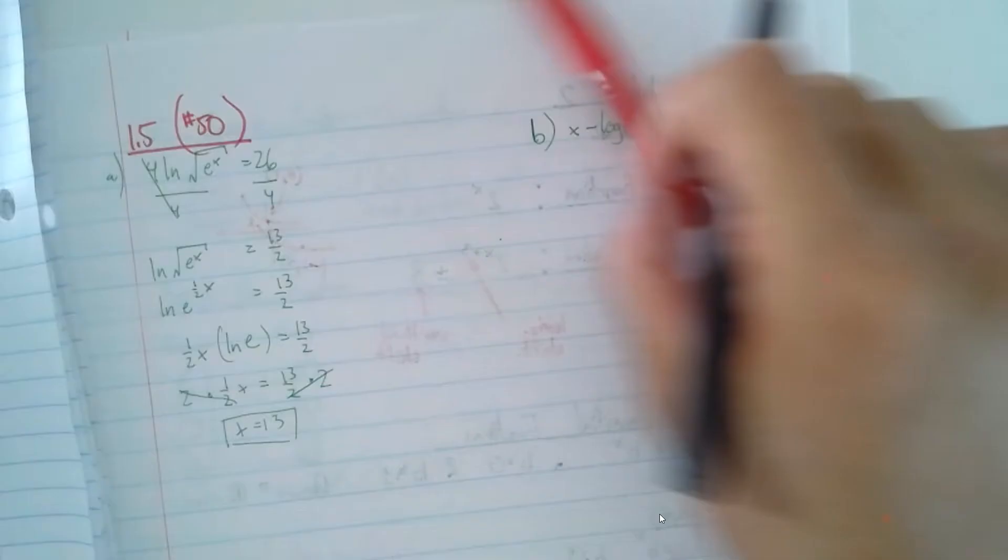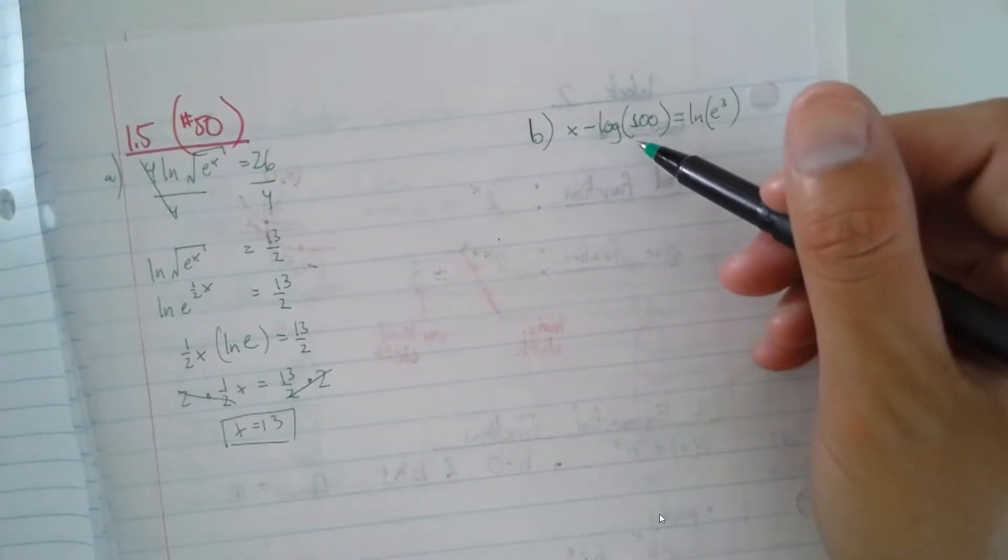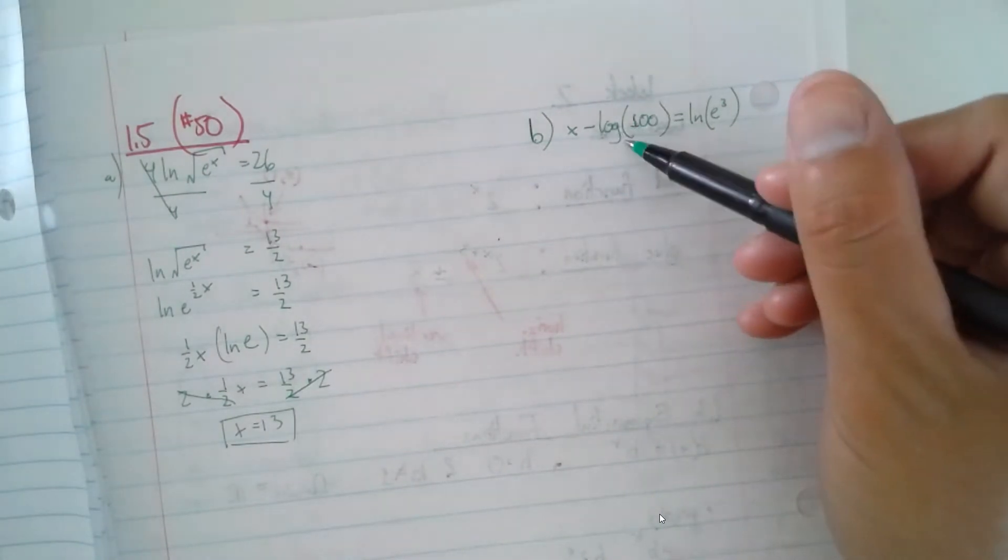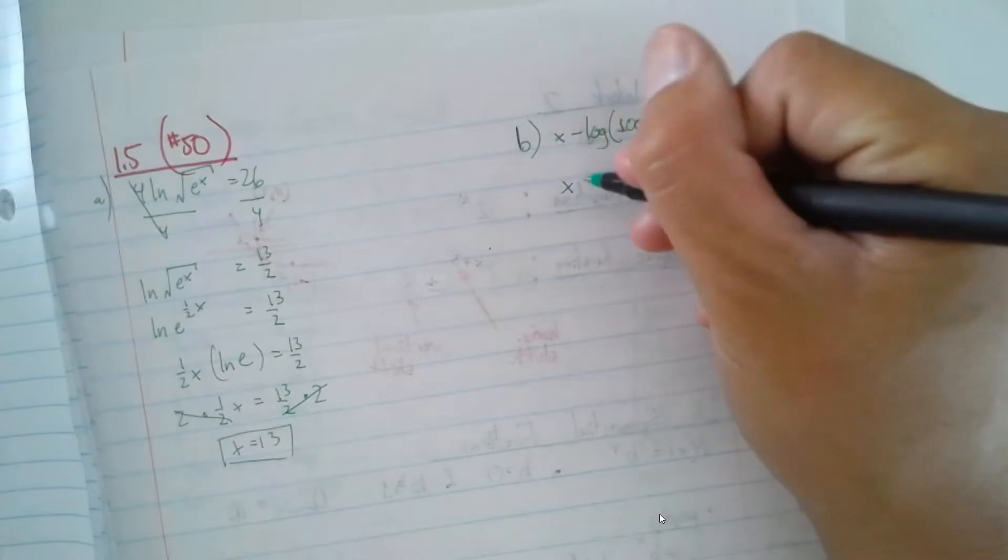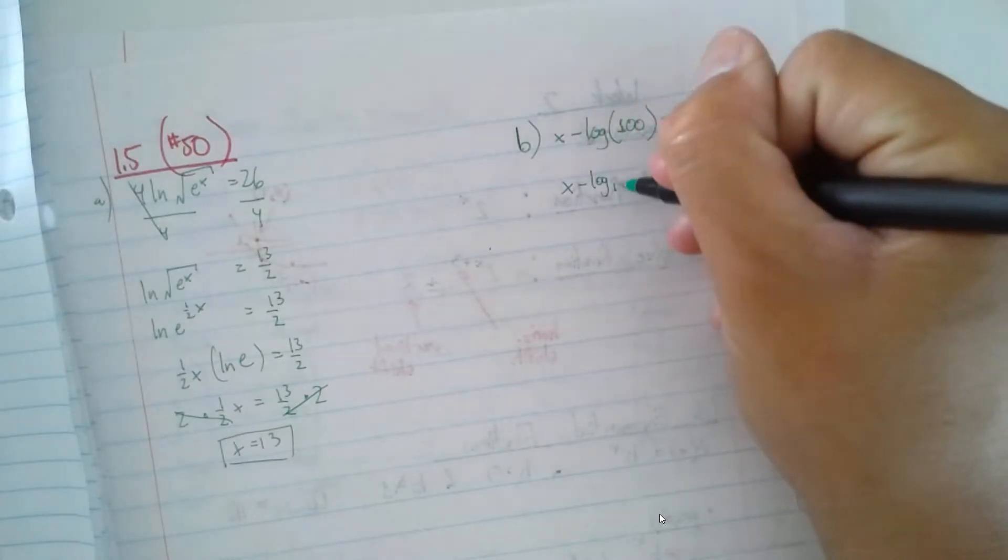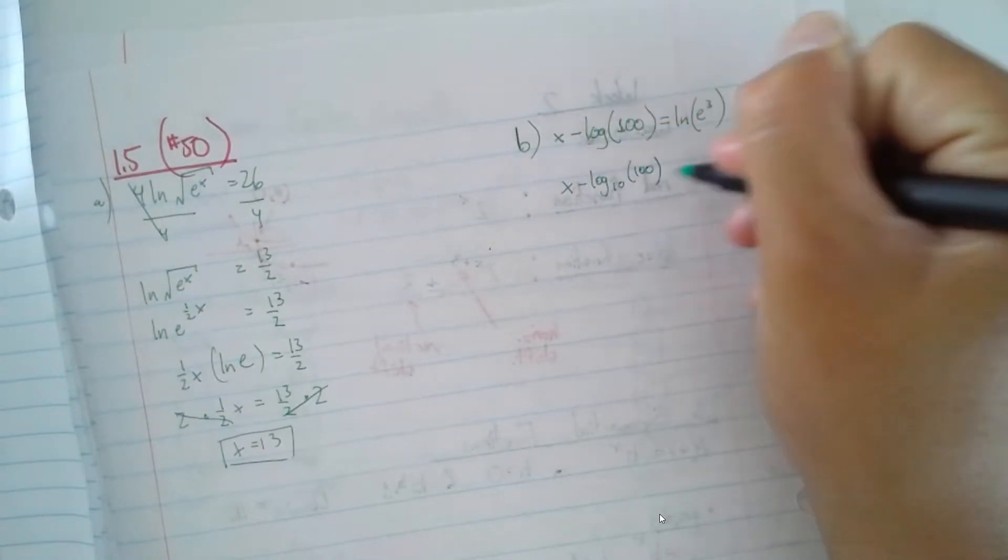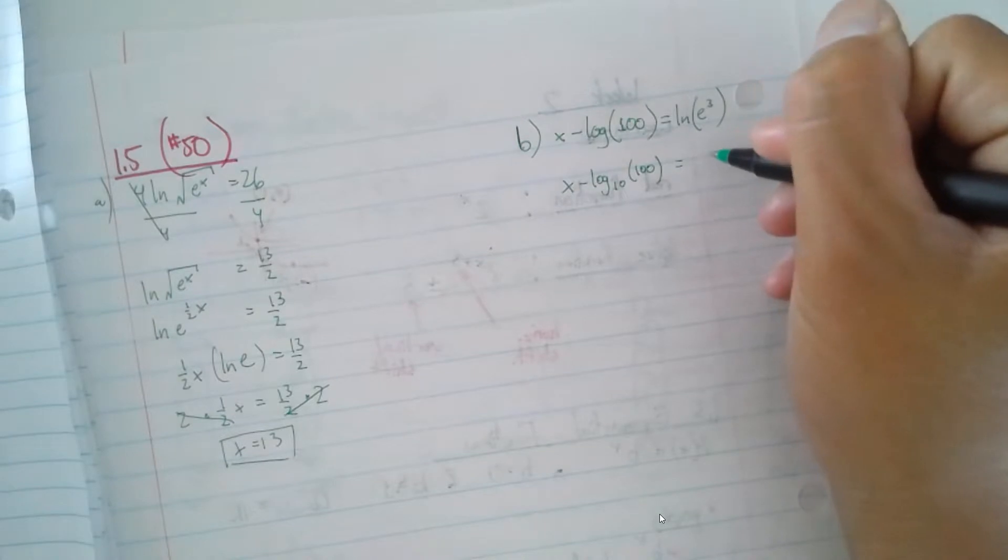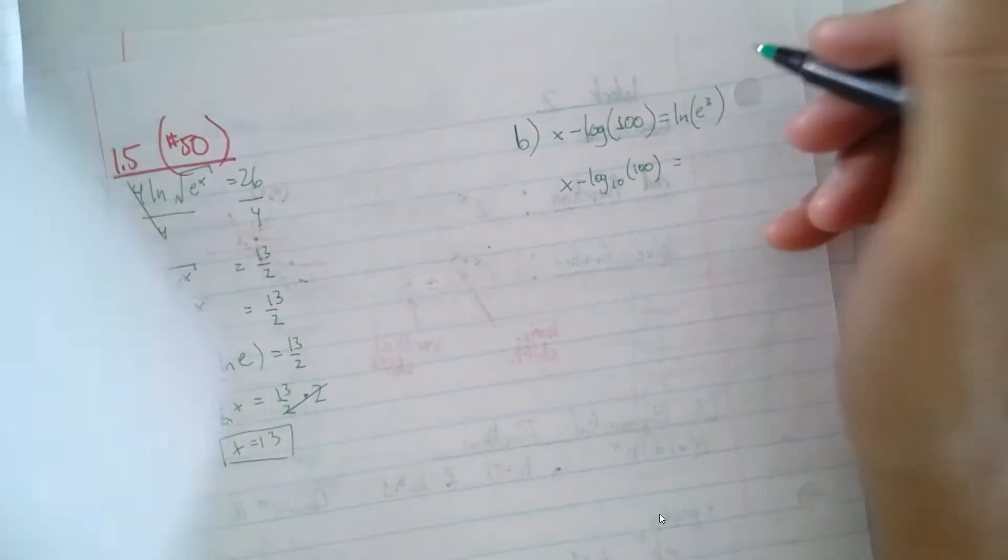Let's go on to the second one. One thing to note, if your log does not have a base there, that implies that your base is actually going to be log base 10 of 100 equals the natural log of... Let's do the power rule here.